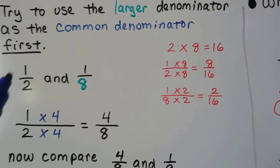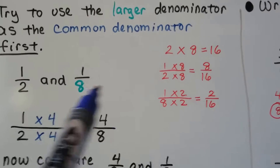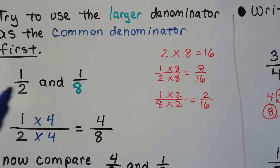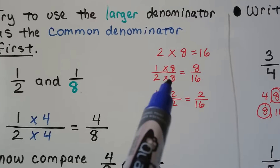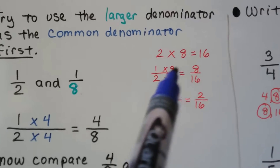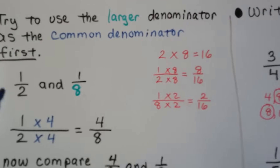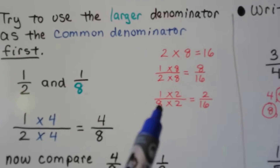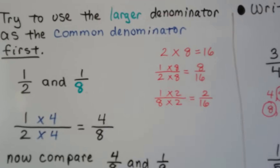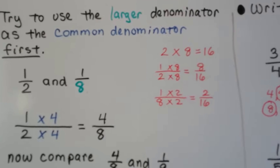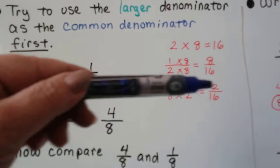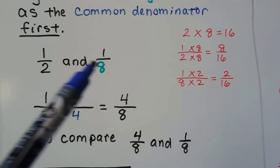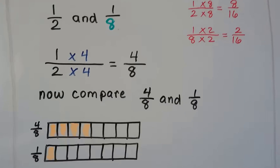There is another way to do this: multiply the denominators together. Two times eight equals 16, so we can use 16 as the denominator. Two times what is sixteen? Eight. So the numerator gets multiplied by eight and becomes eight-sixteenths — that's an equivalent fraction to one-half. Now for the one-eighth, eight times two is sixteen, so the numerator gets multiplied by two, giving two-sixteenths. Eight-sixteenths is greater than two-sixteenths because eight is the larger numerator. But multiplying denominators doesn't always work best — it can make our work harder.